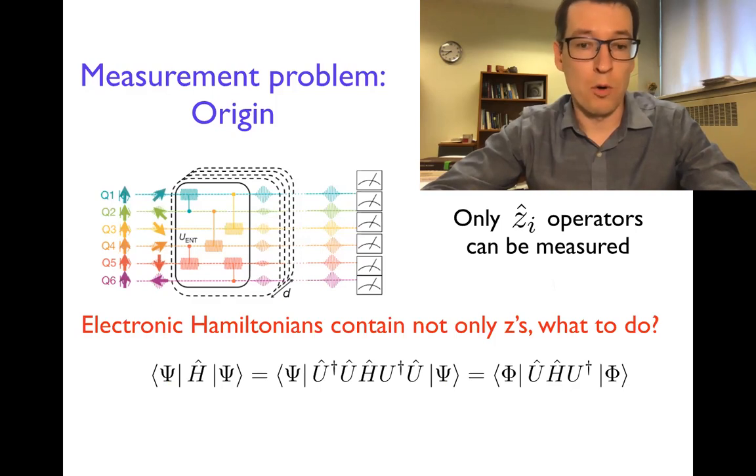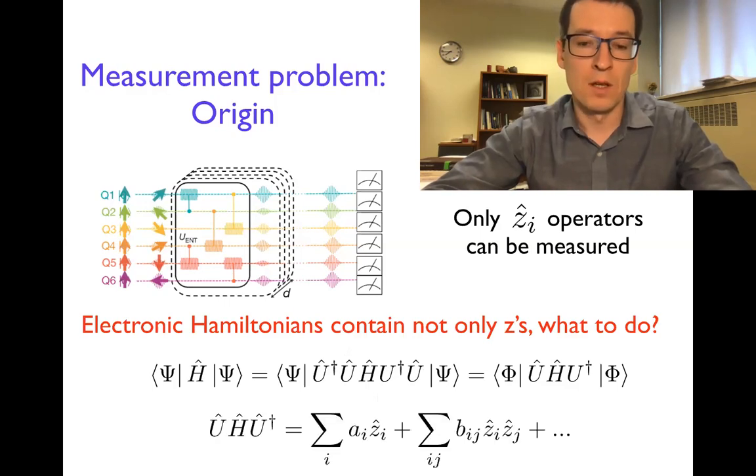The simple approach to this problem would be if you need expectation value of the Hamiltonian, then you can introduce a resolution of identity in terms of some unitary. And the purpose of that introduction is that the unitary will modify the Hamiltonian and the wave function so that expectation value is the same. But the way it will modify the Hamiltonian is that it will make a linear combination of only z operators out of it.